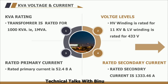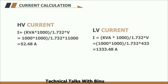Now let's see how this can be calculated. Rated current on the HT side is given by the formula: KVA × 1000 divided by (√3 × voltage). That is 1000 × 1000 divided by 1.732 × 11000, which gives 52.48 A. On the LT side, applying the same formula: 1000 × 1000 divided by √3 × 433, which gives 1333.46 A.